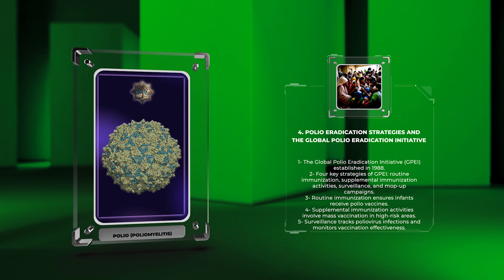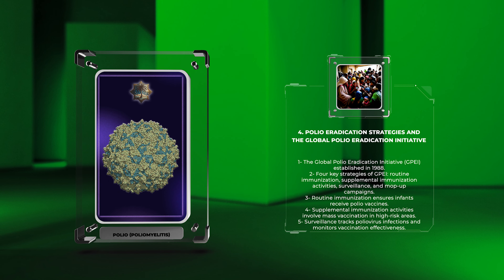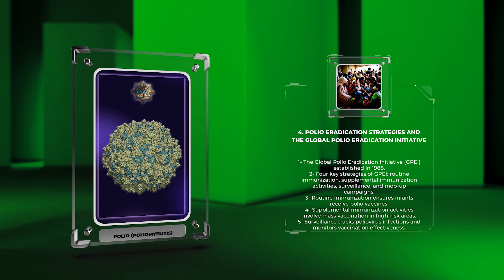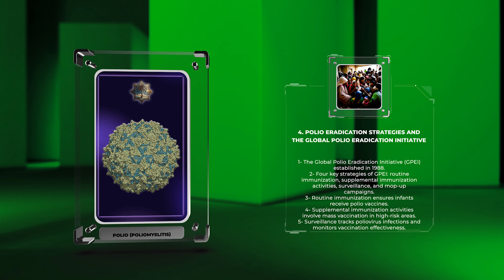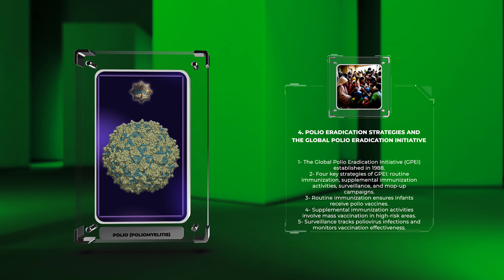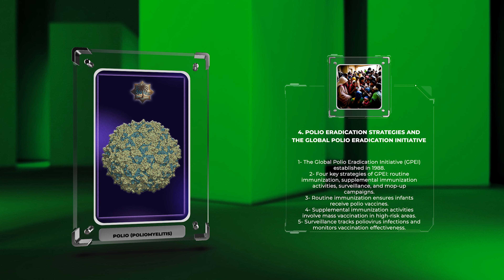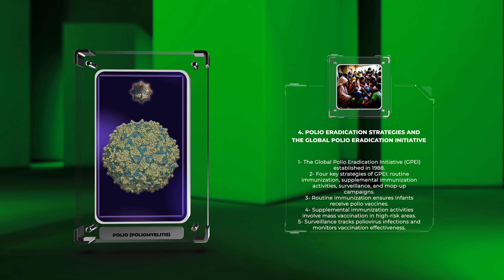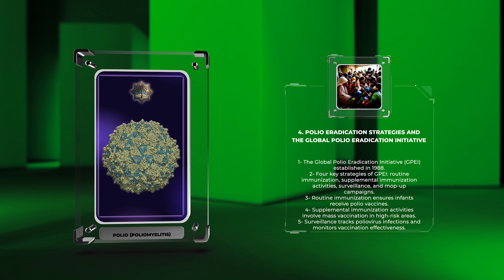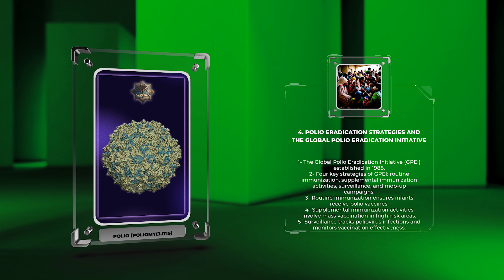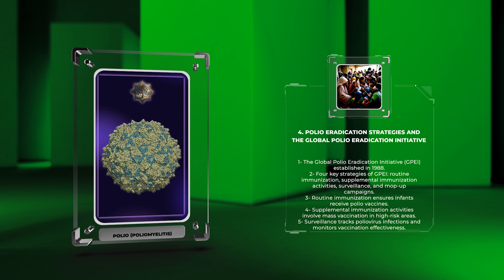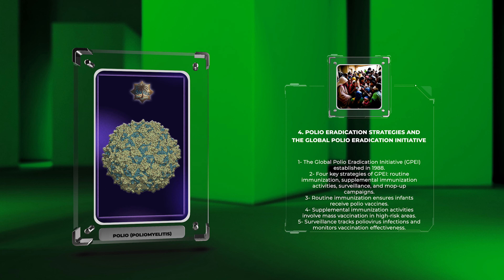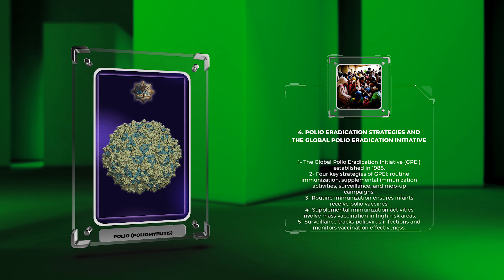Routine immunization ensures that infants receive polio vaccines as part of their regular immunization schedule. The two main vaccines used are IPV and OPV. Supplemental immunization activities involve mass vaccination in high-risk areas to boost immunity and stop transmission. Surveillance tracks poliovirus infections and monitors vaccination effectiveness, mainly through AFP surveillance. Mop-up campaigns target outbreaks or areas with recent polio cases to quickly interrupt transmission. Challenges including vaccine-derived poliovirus outbreaks and vaccine hesitancy still exist, but the GPEI is committed to achieving a polio-free world.